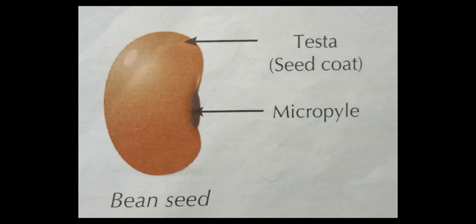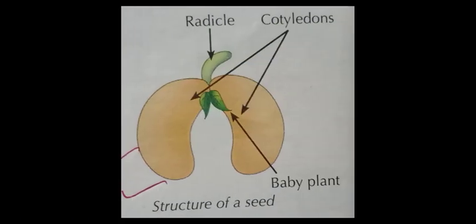There is a tiny hole in the seed called the micropyle, through which the seed absorbs water. Each half of the seed is known as a seed leaf or cotyledon. As clearly shown in the picture, the two parts of the seed are the cotyledons, and the baby plant inside is known as the embryo. The cotyledon stores food for the developing baby plant. The baby root is called the radicle, and the baby shoot is called the plumule.